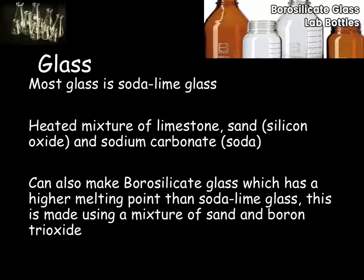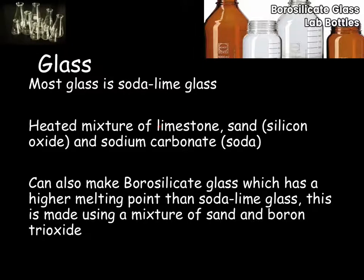Glass is another ceramic material. It's very useful in the modern world due to it being generally transparent. It can be moulded when it's hot and then when it cools down it becomes very brittle. Most glass used is soda lime glass, made by heating a mixture of limestone, sand (which is silicon oxide), and sodium carbonate. We heat this until it melts and when it cools it comes out as glass.